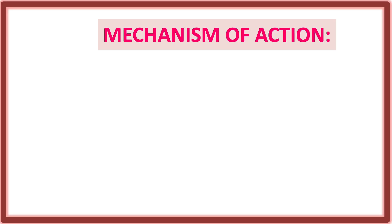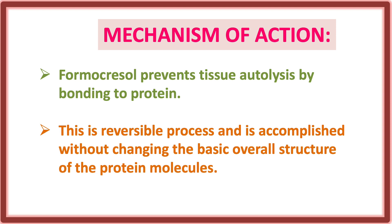The mechanism of action of formocresol: it prevents tissue autolysis by bonding to protein. This is a reversible process accomplished without changing the basic overall structure of the protein molecule, thereby preventing further changes in the protein structure.